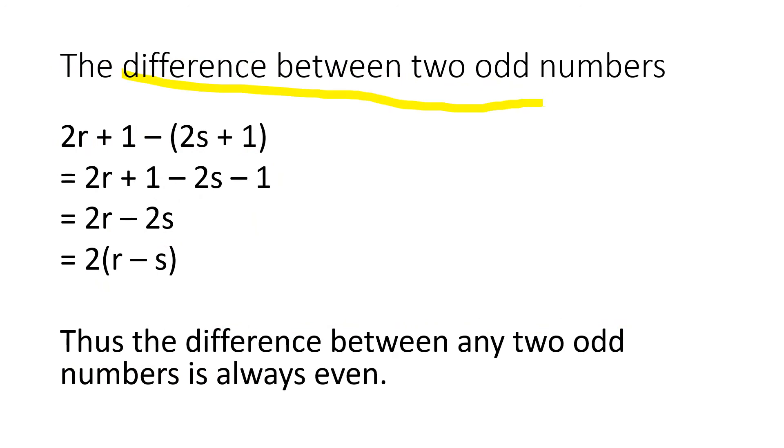The difference between two odd numbers, like 2R plus 1 minus the whole of 2S plus 1. So, 2R plus 1 minus 2S minus 1, simplifying you will get 2 multiplied by the whole of R minus S.